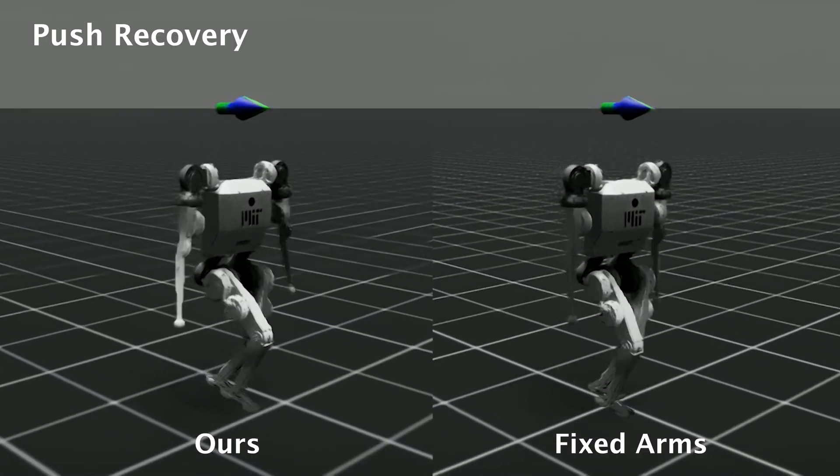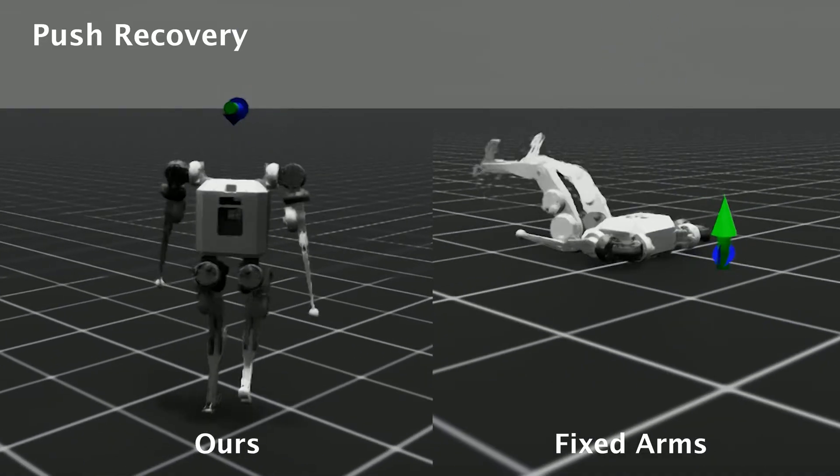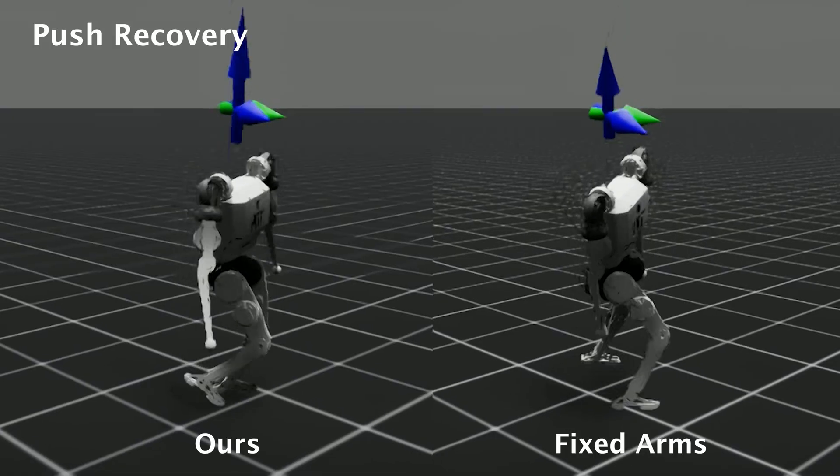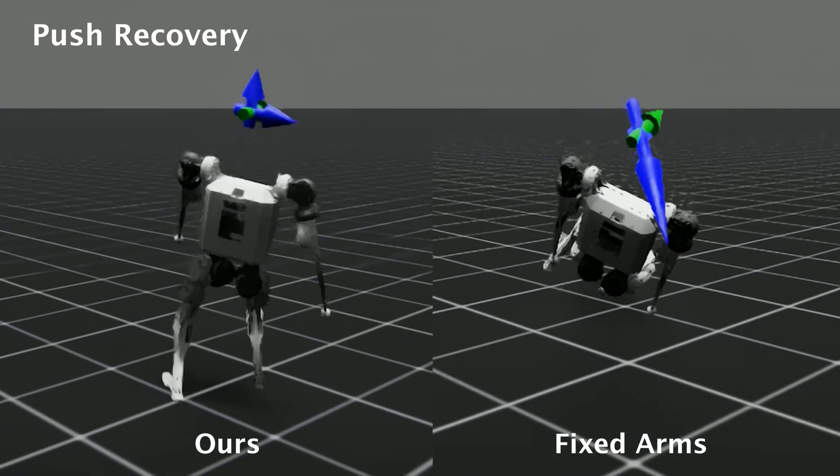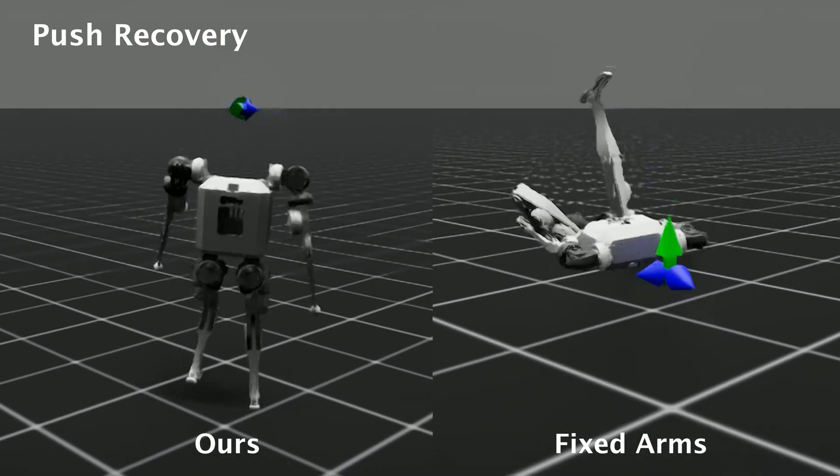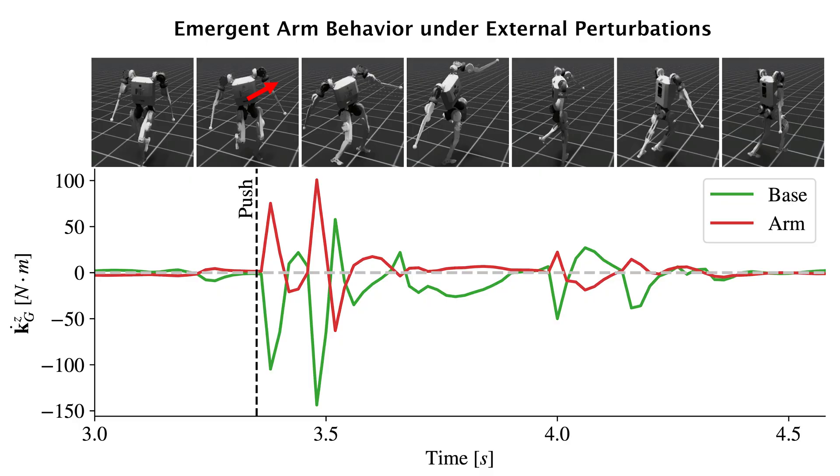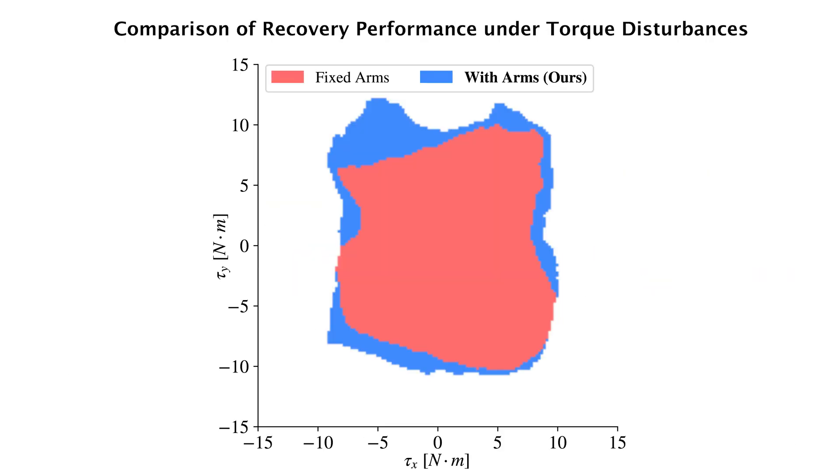Our method further enables robust push recovery by leveraging emergent arm motion. Compared to the fixed arm baseline, our method successfully maintains balance under external perturbations. This is reflected in the CAM dynamics where the arm momentum counteracts the abrupt time rate of change of CAM in the base, and in the significantly larger recovery zones against random torque disturbances.